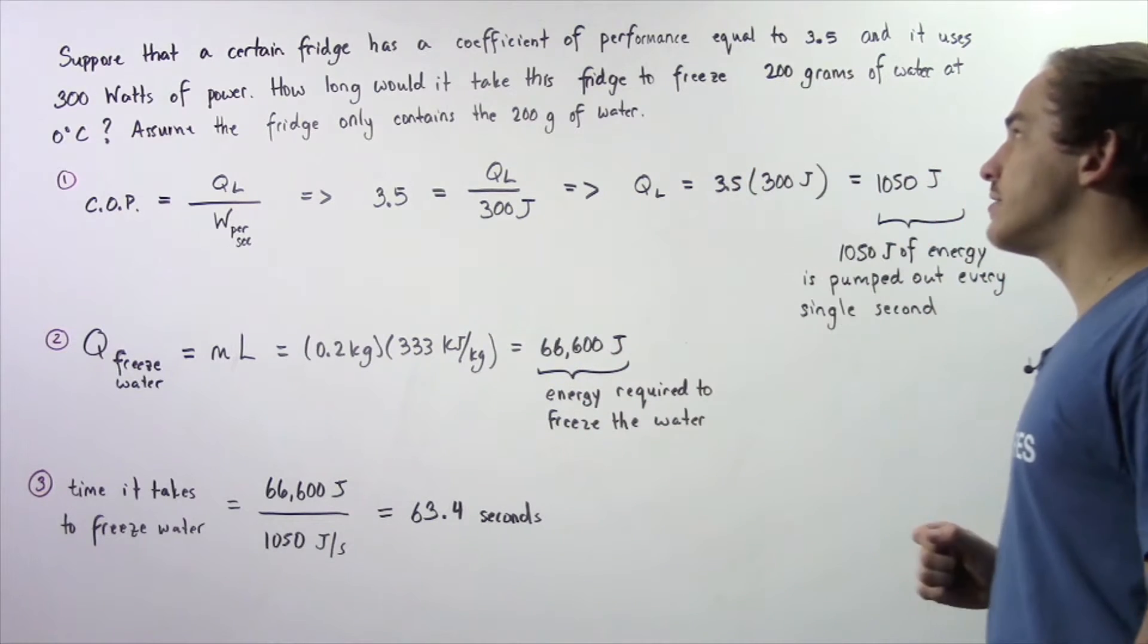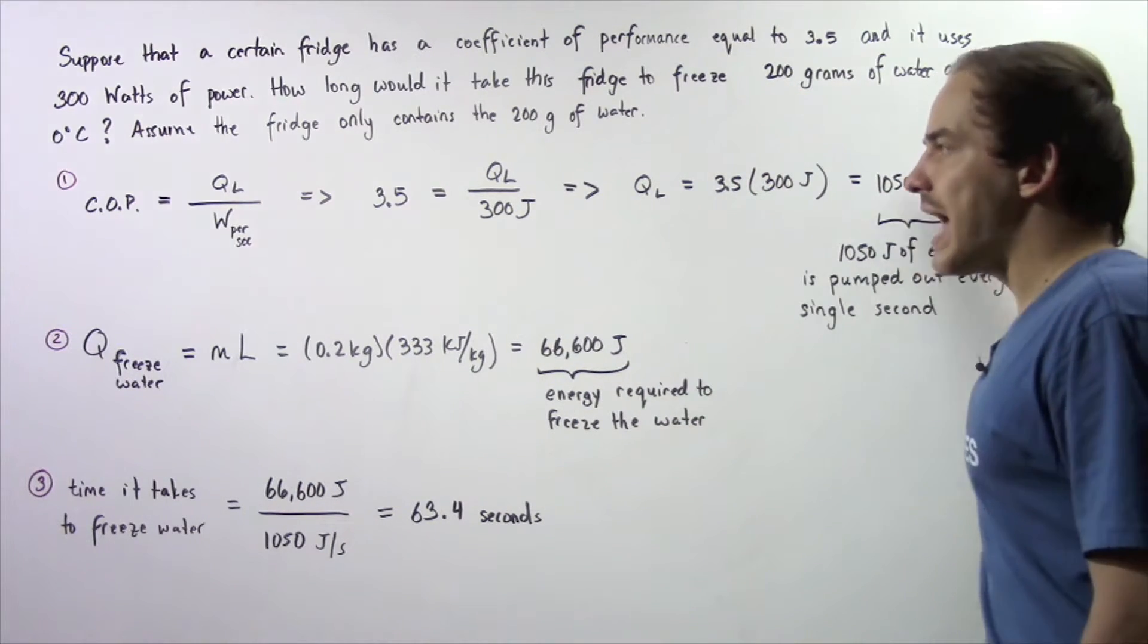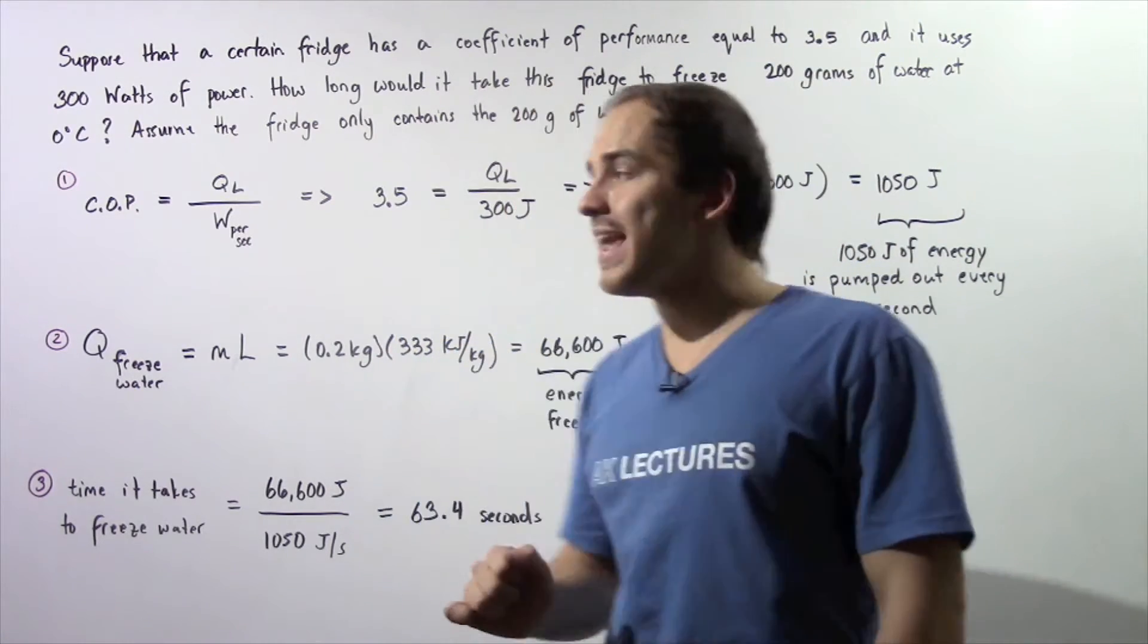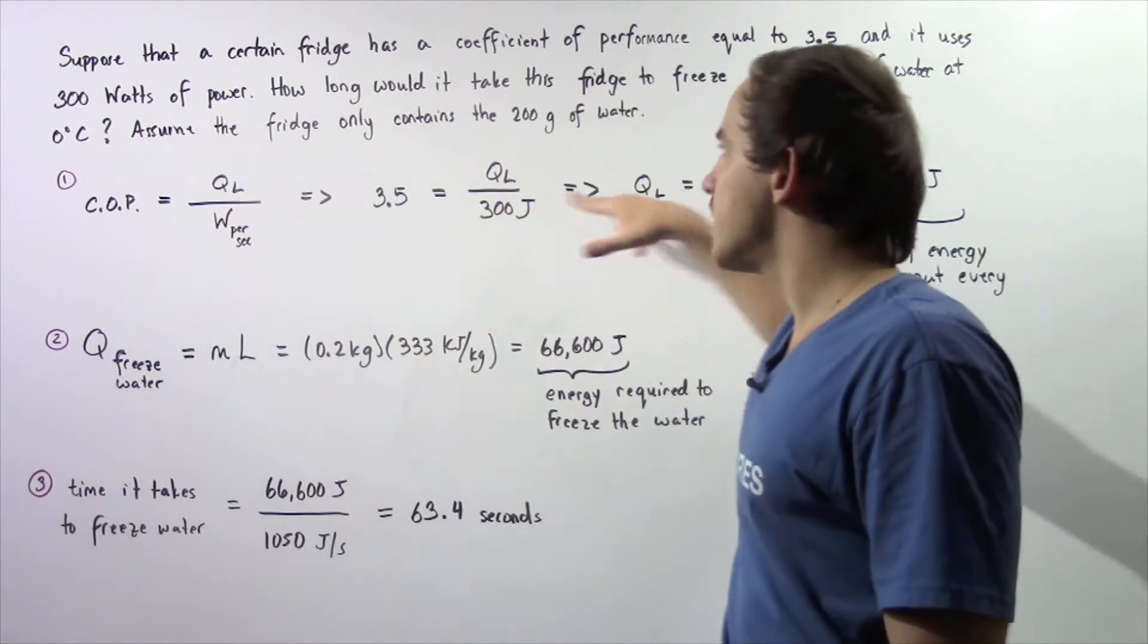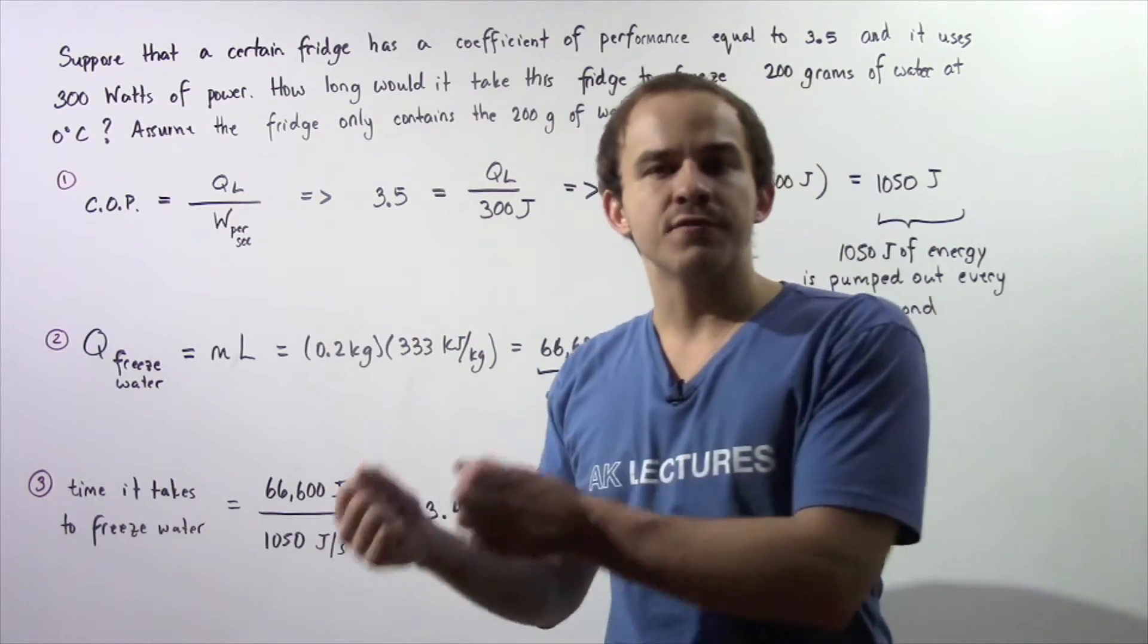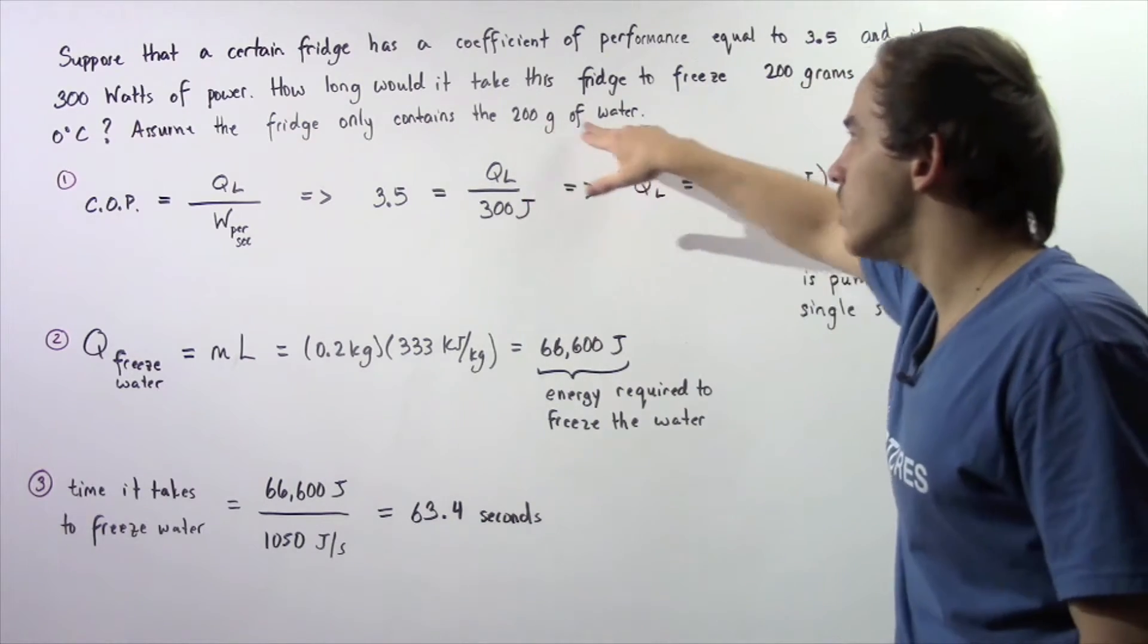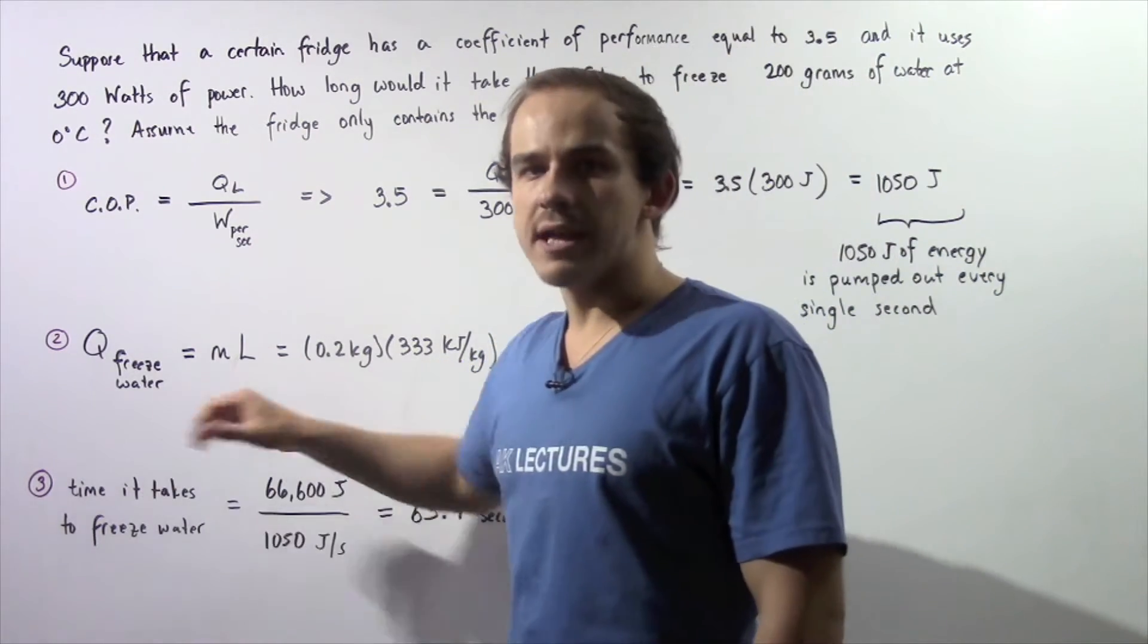How long would it take the fridge to freeze 200 grams of water at 0 degrees Celsius? Assume that the fridge only contains the 200 grams of water and nothing else. So this assumption basically means that all the energy that is transferred out of our freezer is transferred out of the 200 grams of water. That will become important in step 2.